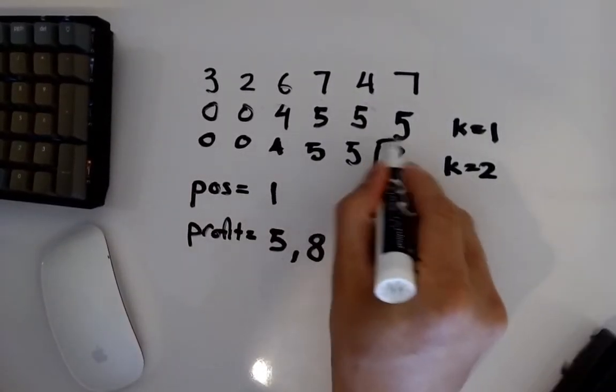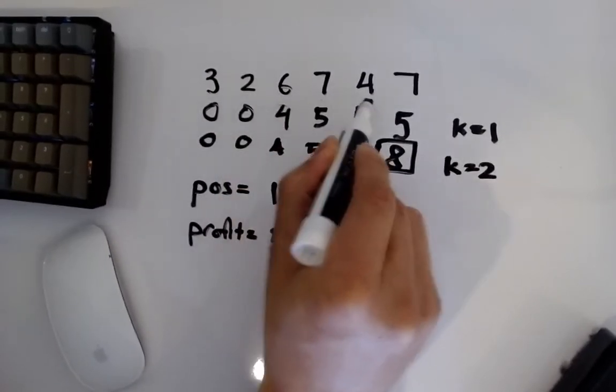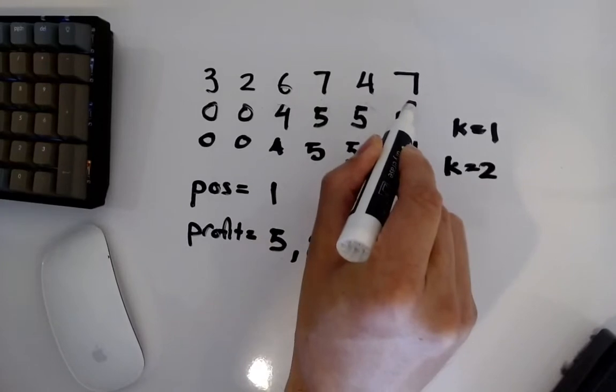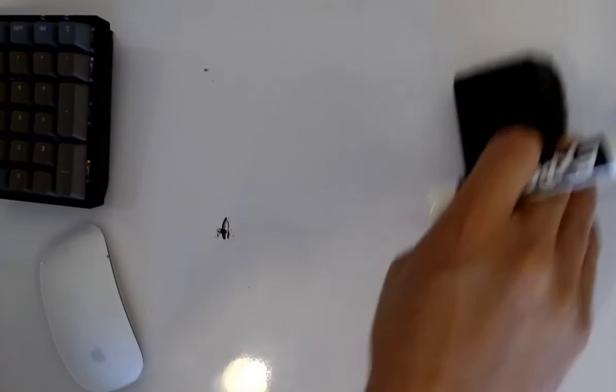That would be it. We want to return a profit of 8 here because you can see we want to buy here, sell at 7, make a profit of 5, then buy here, sell it here, make a profit of 3, equaling 8. All right, so let's code that out and see how it turns out.